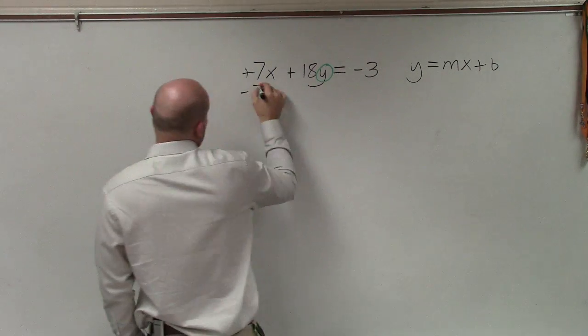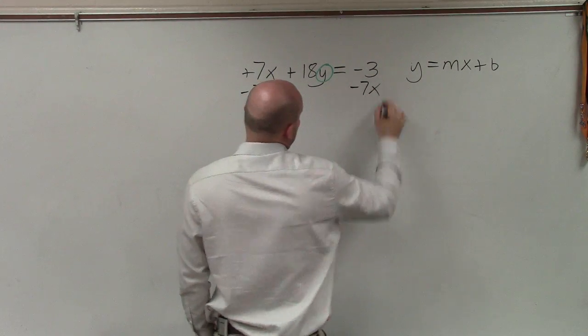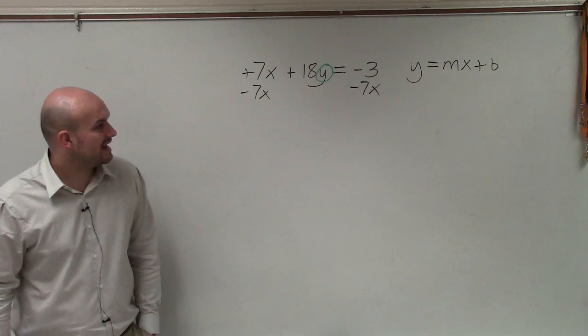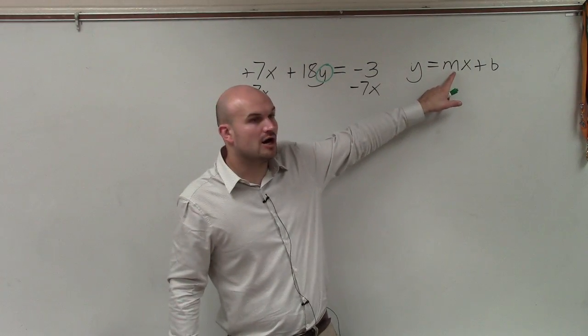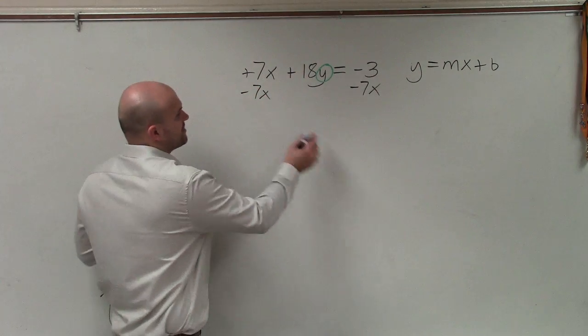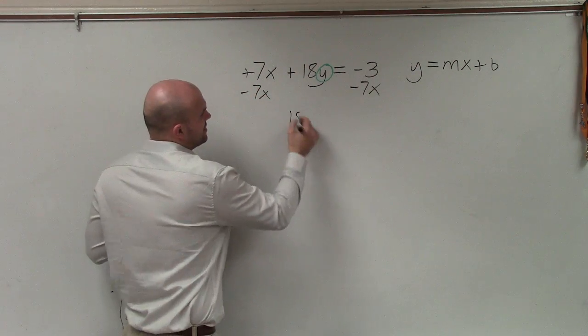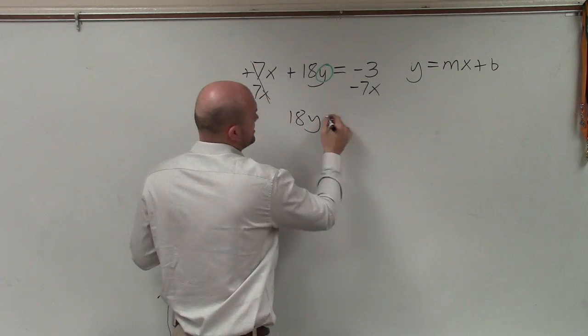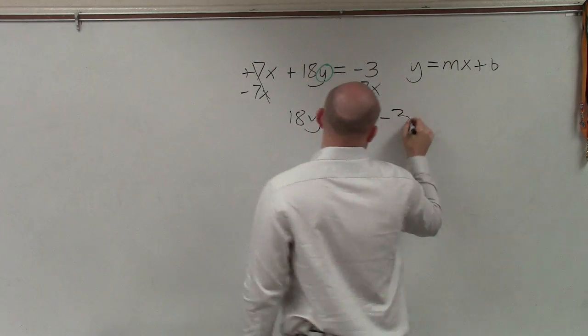So the first thing we do is undo addition and subtraction to our variable. We do not want to write negative 3 minus 7x. We always want to keep our variable in front of our constant b. So I'll just write that as negative 7x minus 3. So I have 18y, that goes to 0, equals negative 7x minus 3.